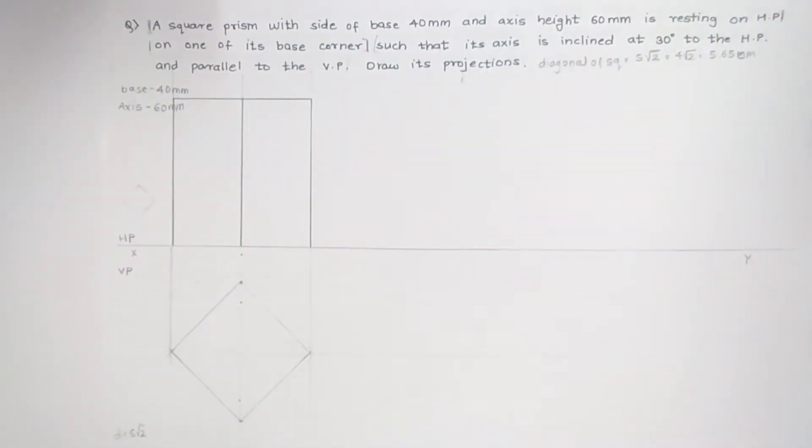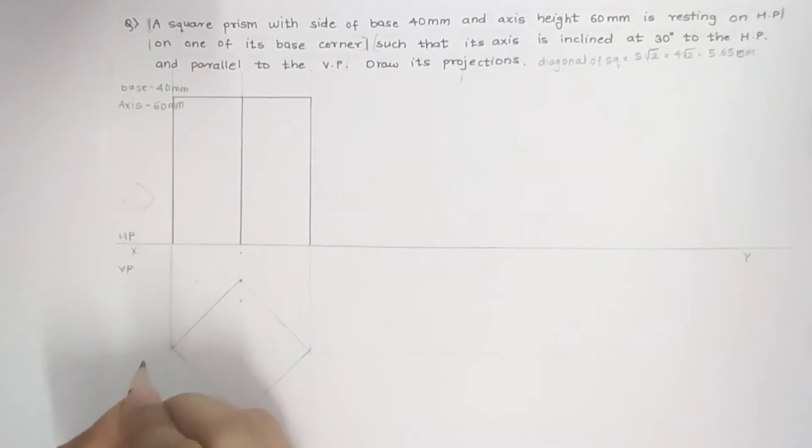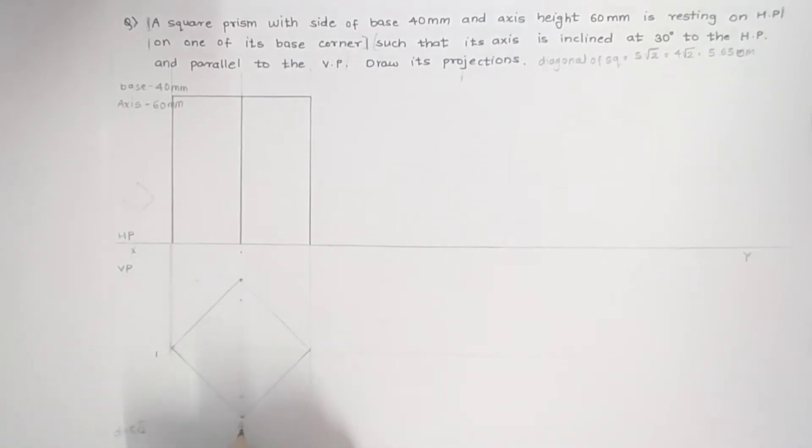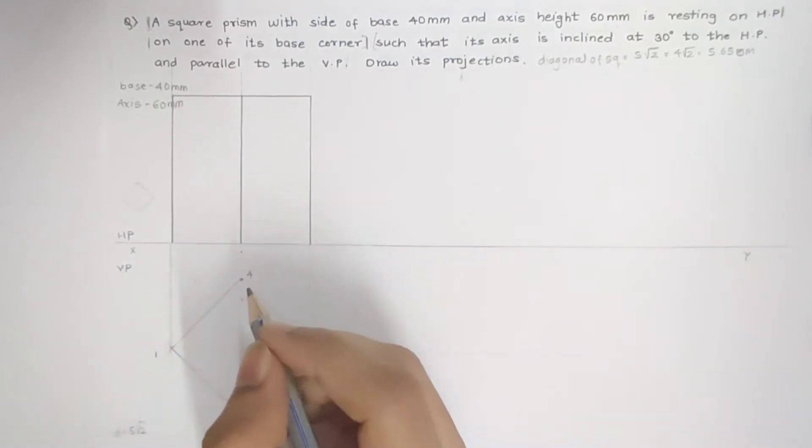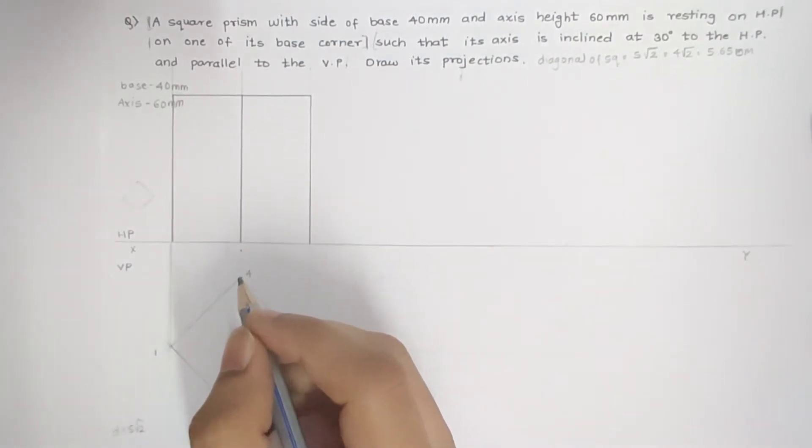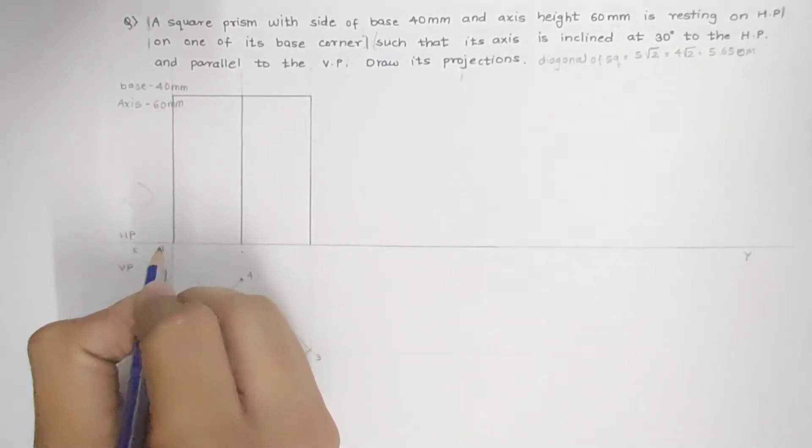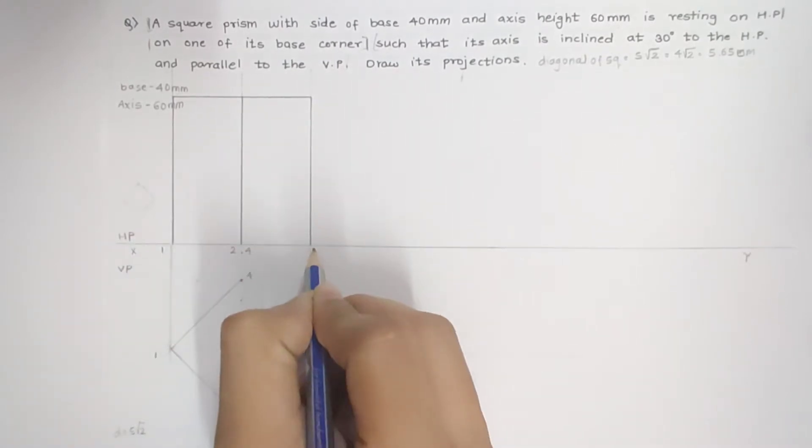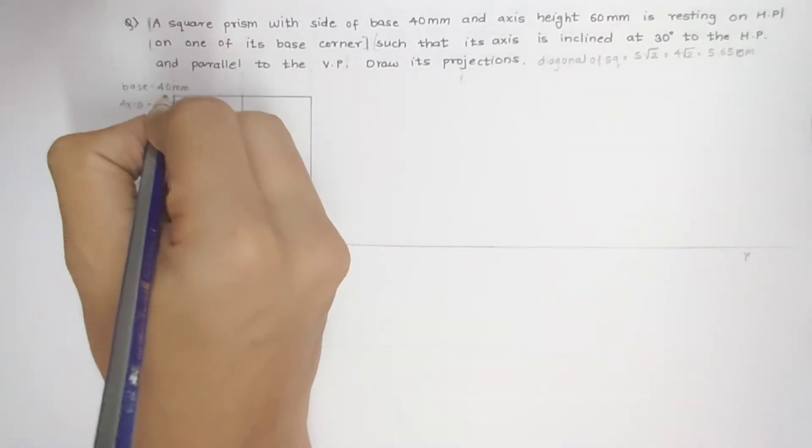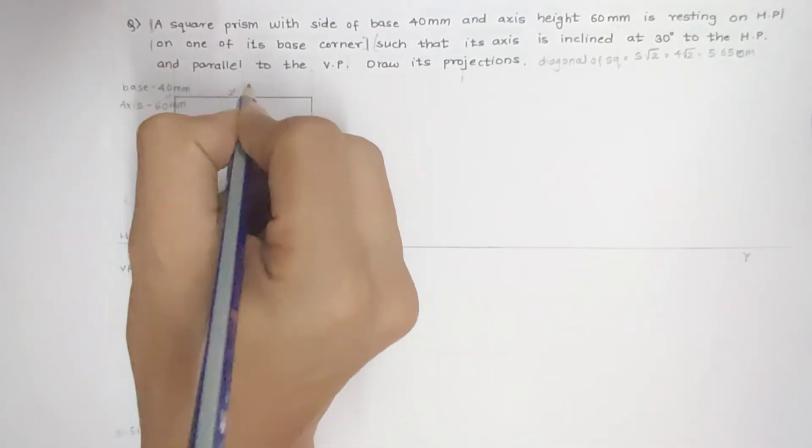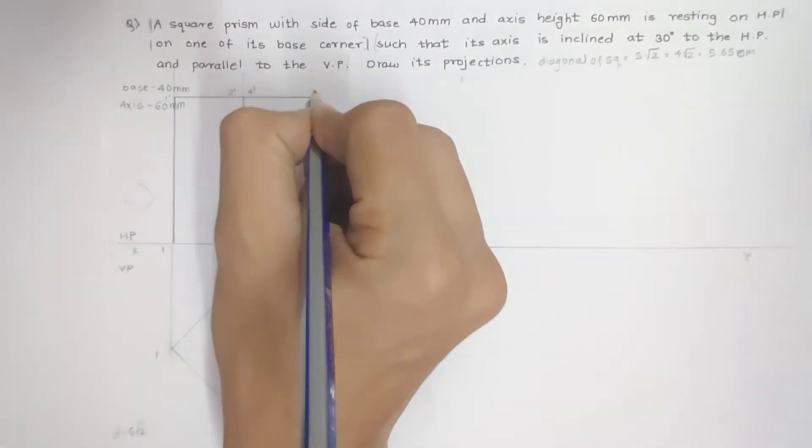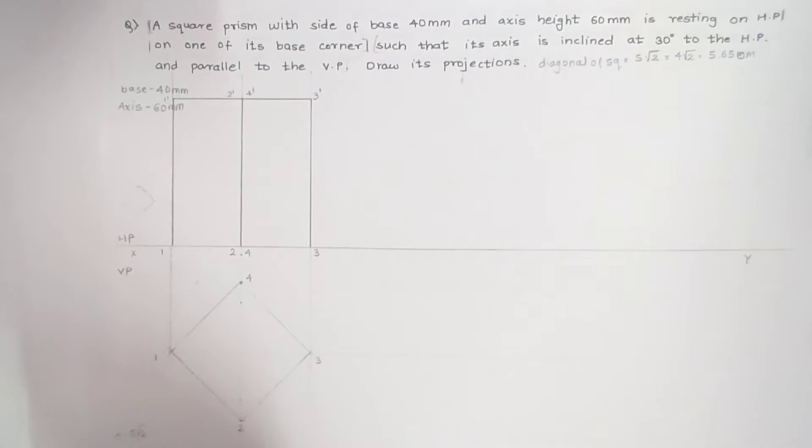Let me name the corners. This is my first, second, third corner, this is 4. That would make it 1, this is 2, this is 3. This is 1 dash, 2 dash, 3 dash. The first part is complete now.